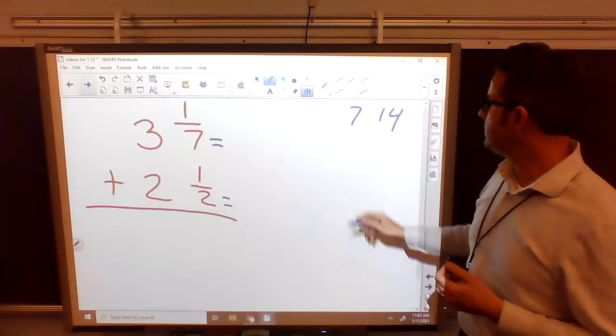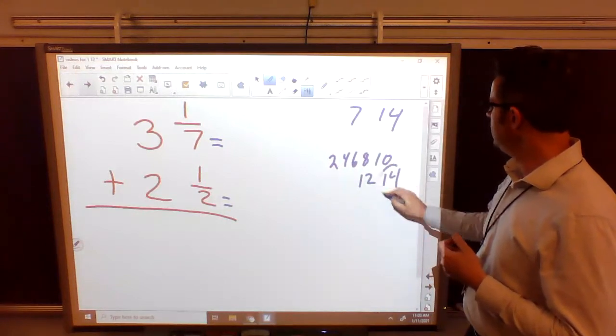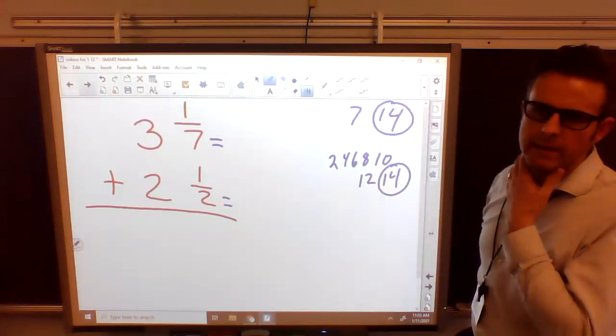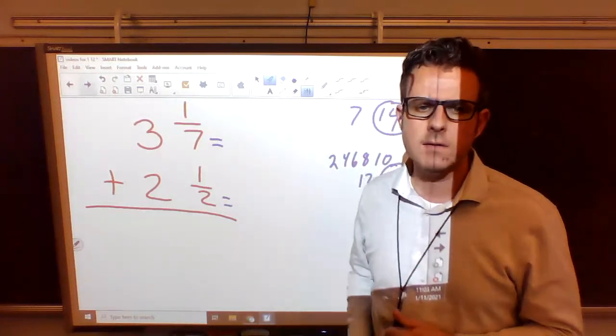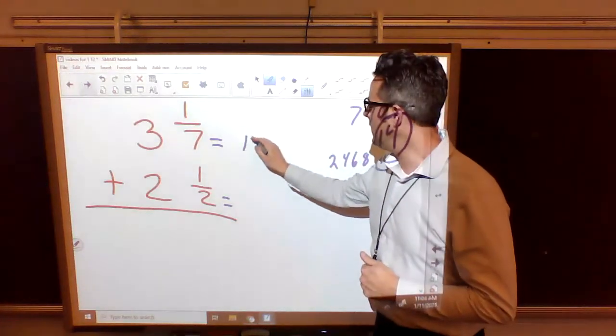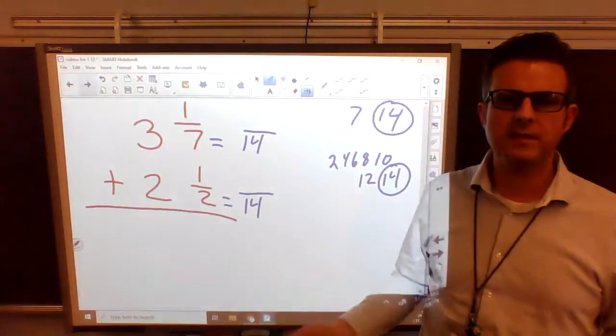If I count by 2s, I get 2, 4, 6, 8, 10, 12, 14. 14 is the first number that appears in both of them. That is the least common multiple of 7 and 2. So we have to change them both into 14s so that we're dealing with the same thing.